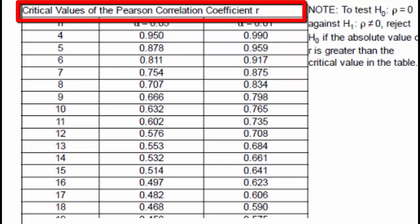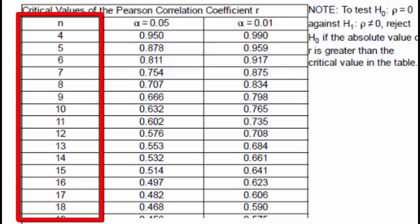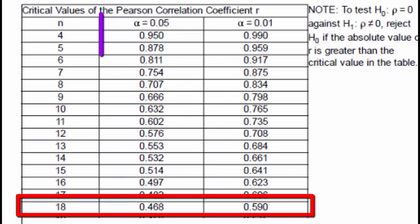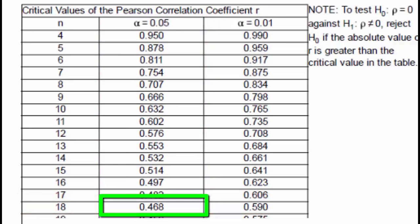The table shown here lists the critical values for a 5% and 1% level of significance. Down the left-hand side of the table we see the n column. For an n of 18 and an alpha of 0.05, or 5%, the critical value in the table is 0.468. For there to be a linear correlation, the correlation coefficient needs to be greater than the critical value — in other words, greater than 0.468 for there to be a linear correlation between the heights and the pulse rates of women.